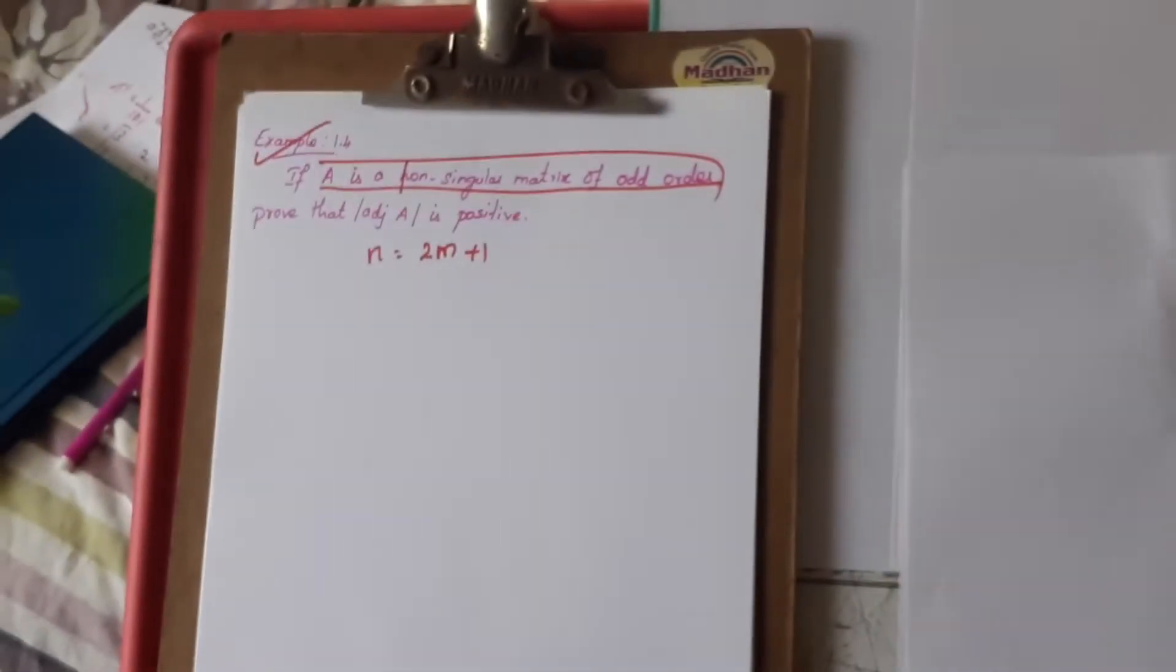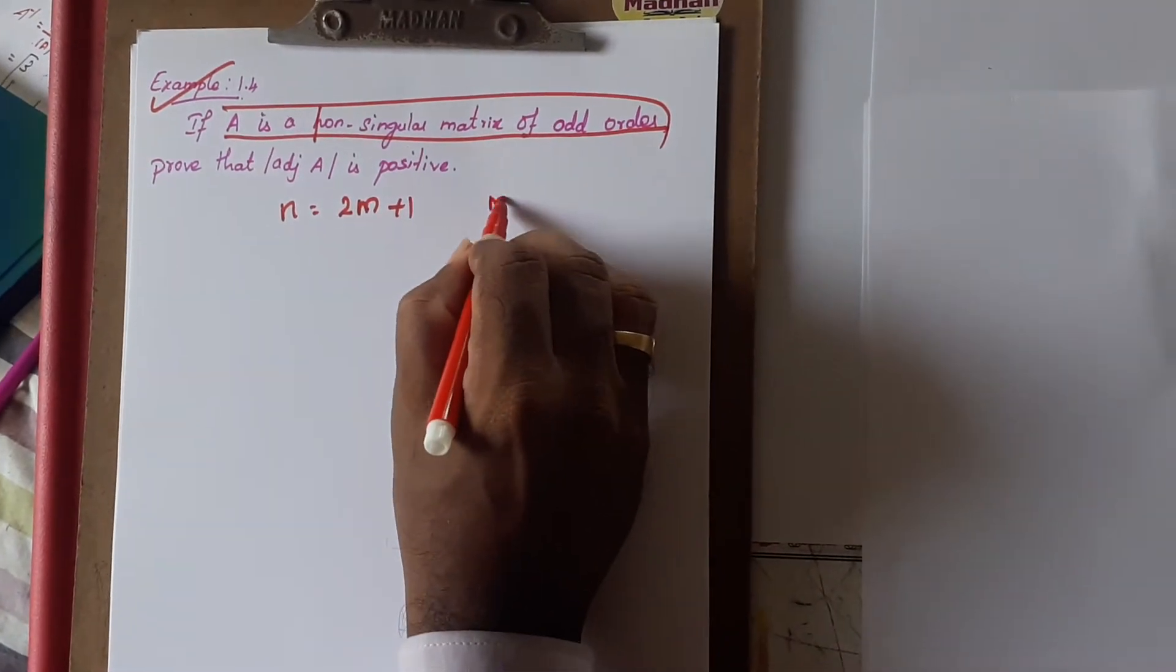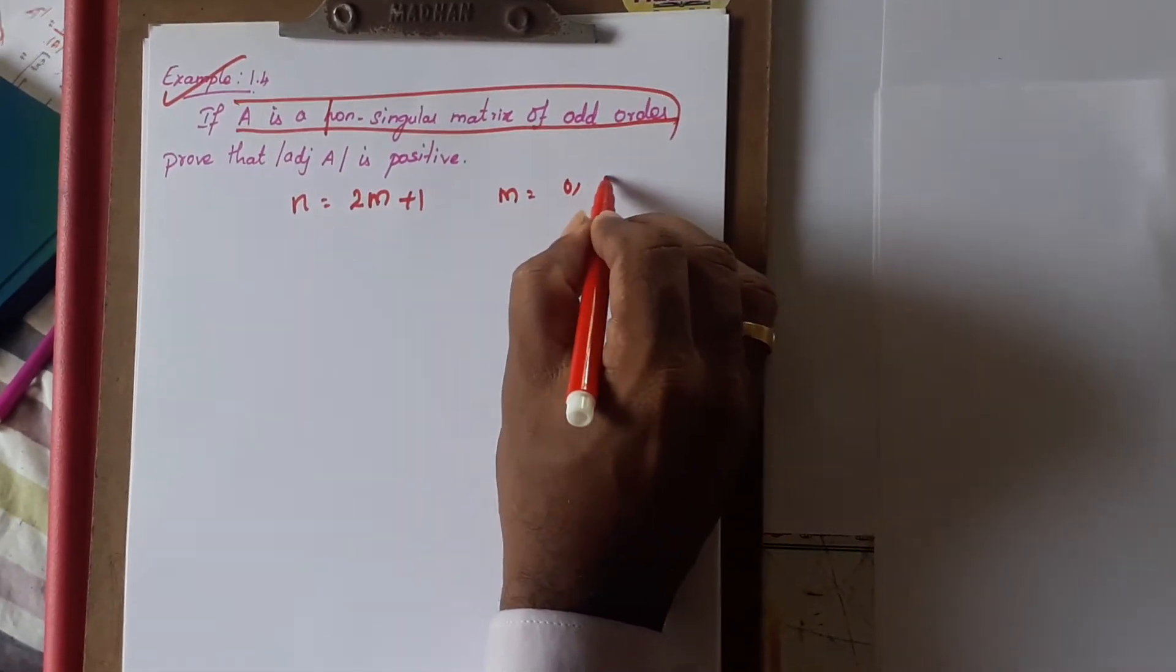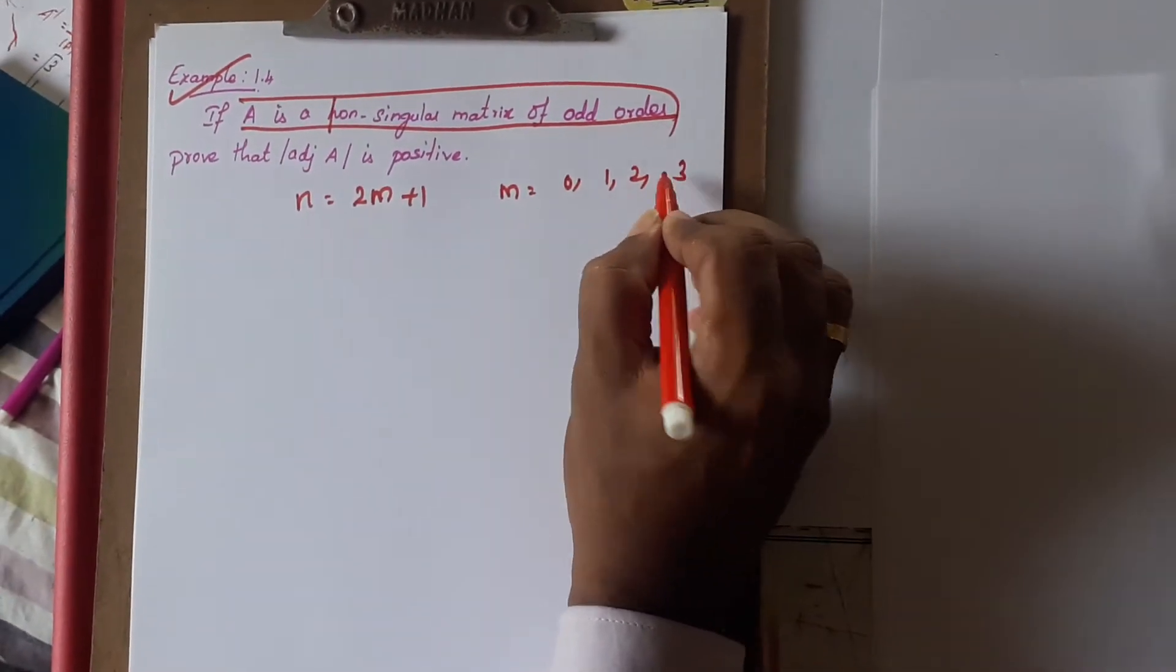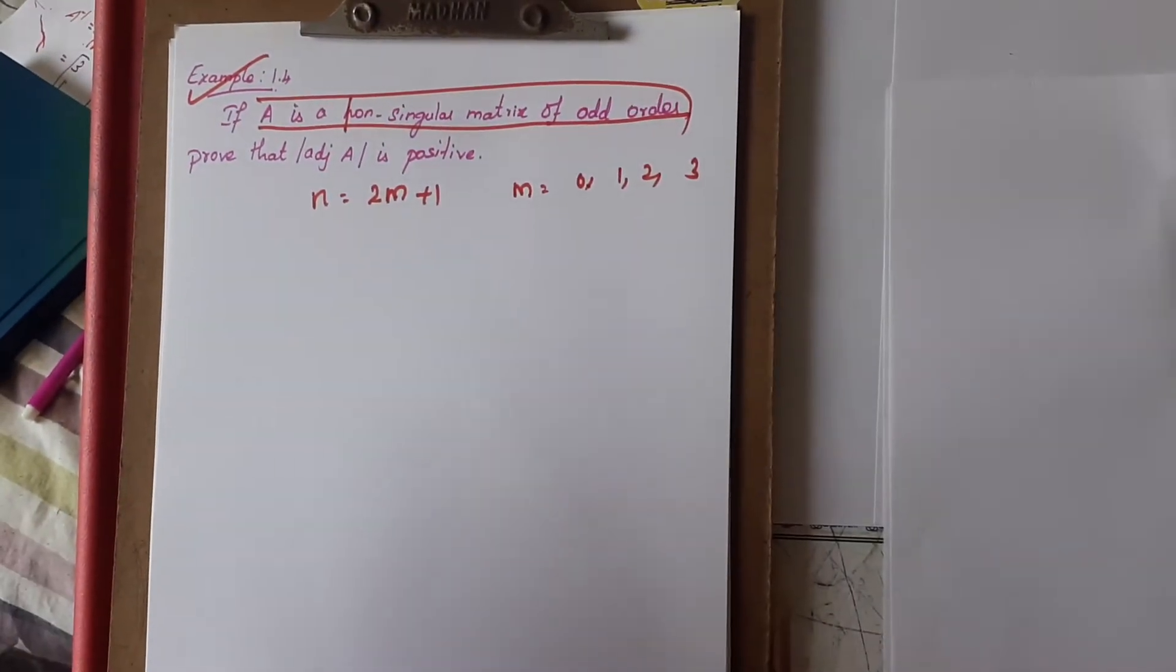Non-singular matrix of odd order means, for example, 2M plus 1. Each time M equals 0, 1, 2, 3. If you apply instead of M...